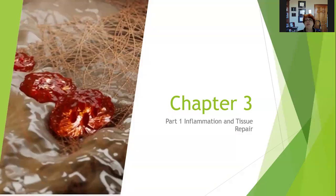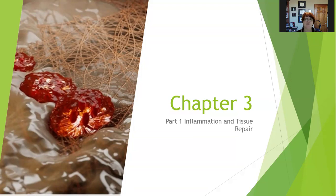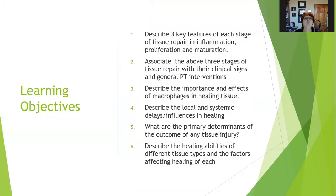We started talking about inflammation and tissue repair last quarter in pathophysiology, and we're going to continue to talk about that and about pain theory. The same themes continue throughout — we're just going to add a little bit of nuance with regard to physical agents. For the learning objectives, I want you to be able to describe three key features of each stage of tissue repair: inflammation, proliferation, and maturation, and associate those three stages with their clinical signs and general PT interventions.